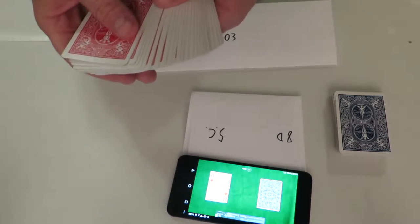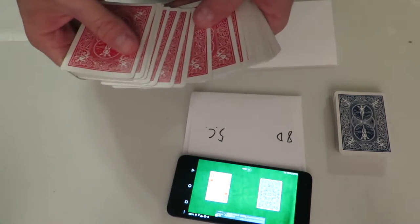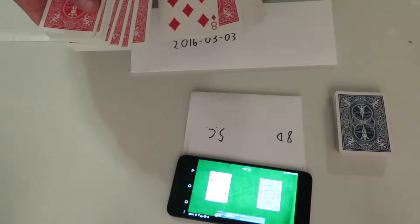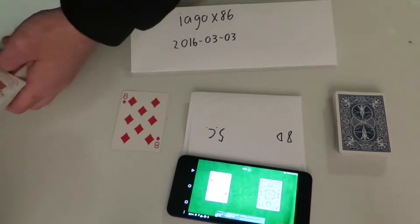Alright, let's see if we can find the five of clubs. Wait, that's the eight of diamonds. Alright, hang on.